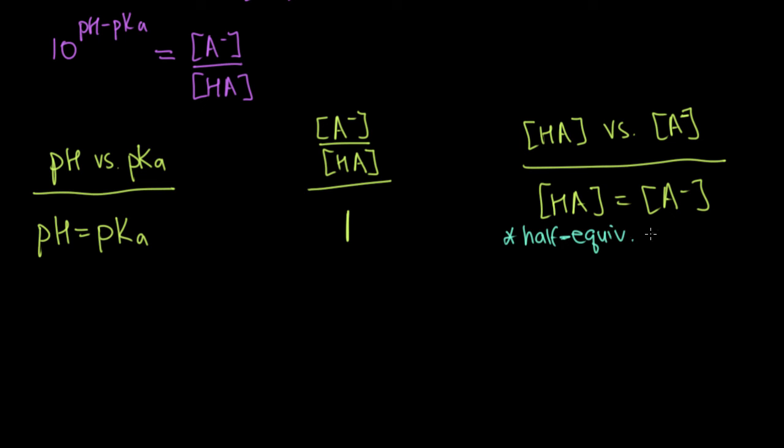And the point in your titration where the HA is equal to A minus is called the half equivalence point. And if you haven't learned about titrations yet, that's totally fine. Just ignore what I just said. But if you have, the moral is just that it's really a really important relationship that it's really helpful to remember.